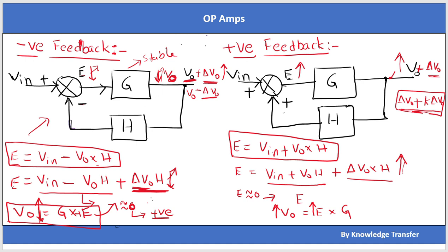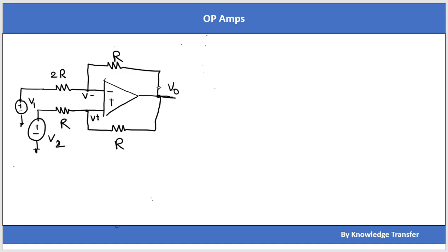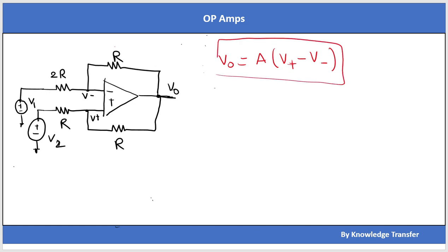Let's go through an example with an op-amp. I have an op-amp with voltages V1 and V2, with feedback from the output to the inverting terminal and the non-inverting terminal. The general op-amp equation is: V0 = A × (V_non-inverting − V_inverting). To find the feedback type, we short-circuit voltage sources and open-circuit current sources.